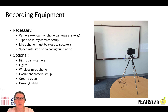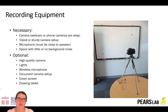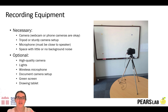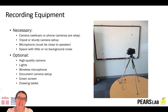What do you need for recording equipment? You need a camera, a tripod or at least a sturdy camera setup, and a microphone — that's key. My original videos used just the microphone on my camera, and that was not good enough. Then I got a wired mic, and now I have some wireless microphone setups that you can get for a fairly affordable price. Optional things include a higher quality camera, better lights, a wireless microphone, a document camera setup, or a green screen like I'm using now — but you don't need all of those things.